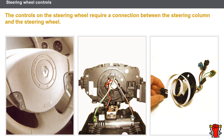Let's now look at the controls located on the steering wheel. On vehicles with controls on the steering wheel, a connection is required between the steering column and the steering wheel. This connection consists of a rotary switch. One end of the rotary switch is connected to a static connector, and the other end is connected to the steering wheel.